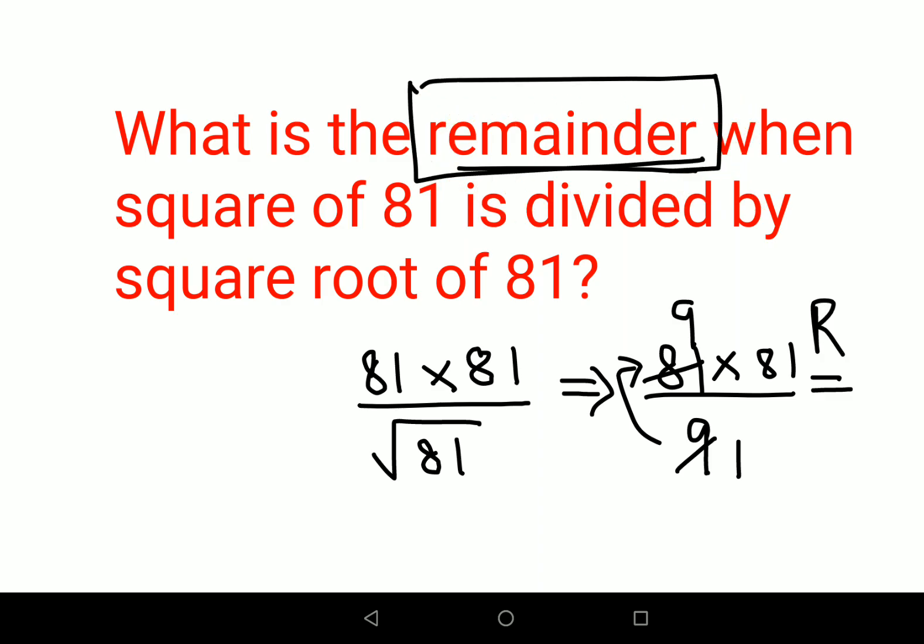When the denominator completely divides your numerator, in this case your remainder comes out to be 0. So my dear friends, the answer for this one is 0.